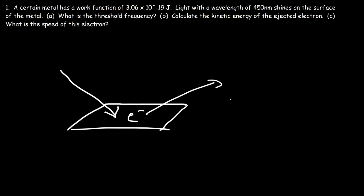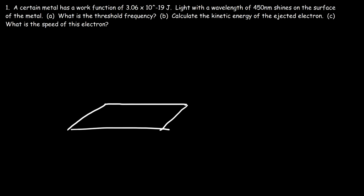This light has to be of a certain wavelength. If the frequency is not high enough, the electrons will not be ejected off the surface of the metal. Red light has a relatively low frequency compared to blue light. For most metals, if you shine red light on them, it's not going to be enough — red light doesn't have enough frequency or energy to eject an electron from the surface.